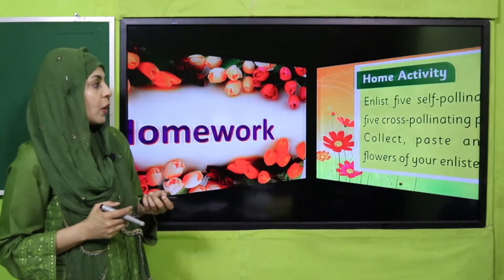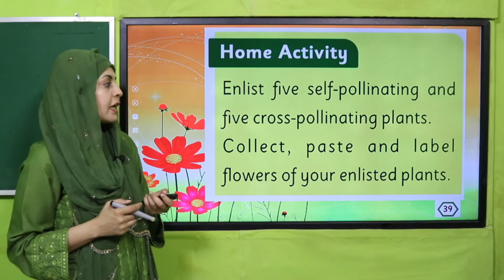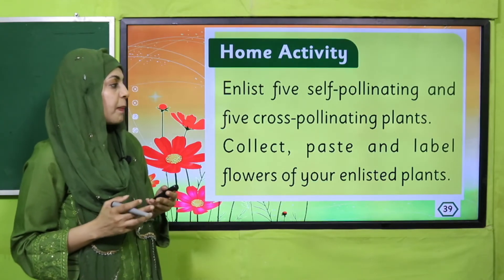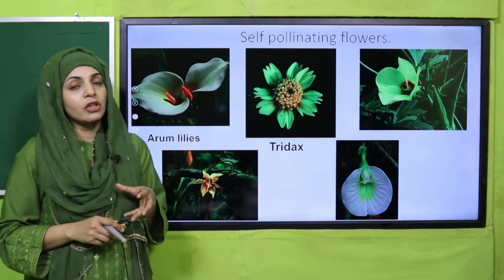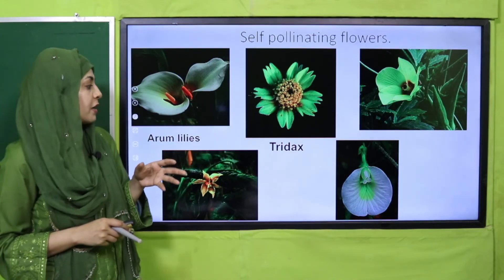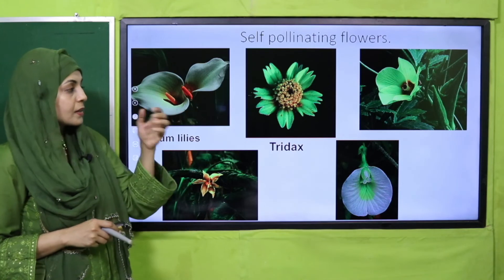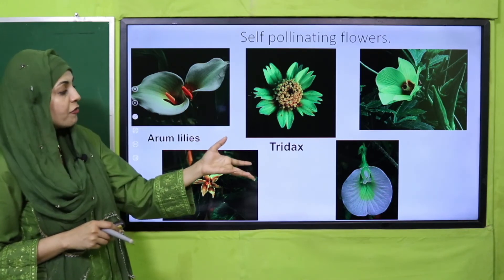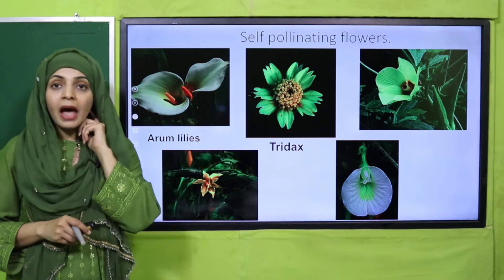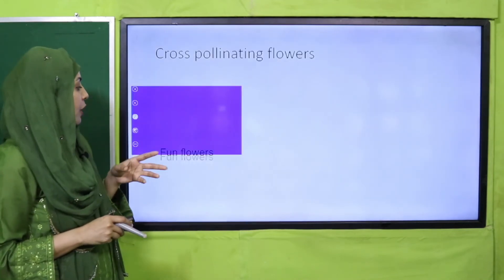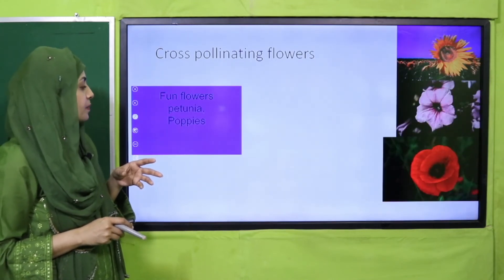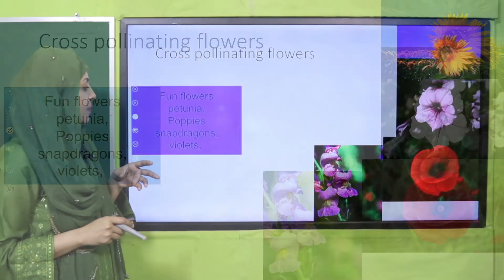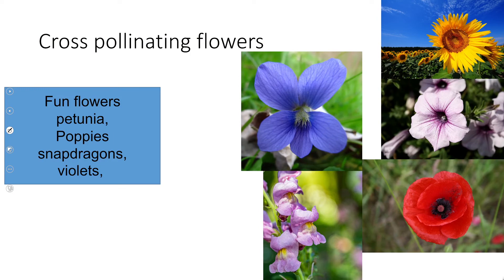Quickly note down your homework — home activity: enlist five self-pollinating and five cross-pollinating flowers. Collect, paste, and label the flowers of your enlisted plants. Self-pollinating flowers include arum lilies, tridax, tomato flowers, peep flowers, and okra. Cross-pollinating flowers include sunflowers, petunia, poppies, snapdragons, and violets. Collect the pictures, paste them, and write their names.